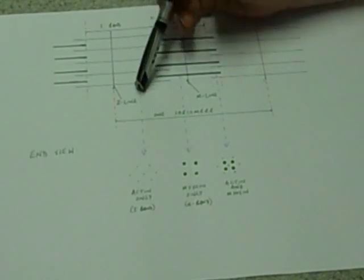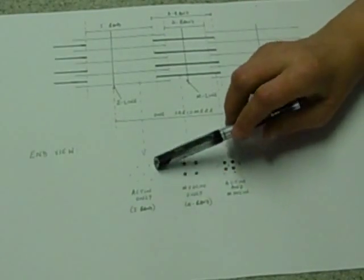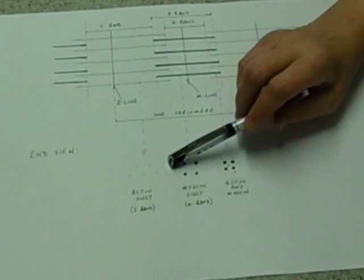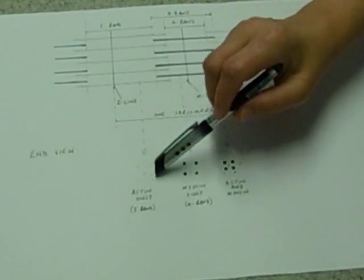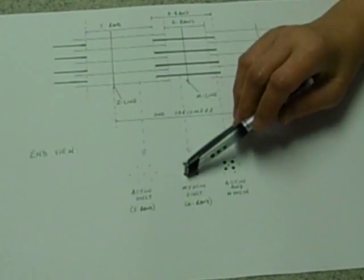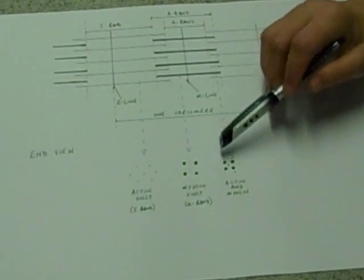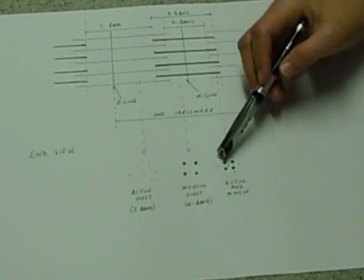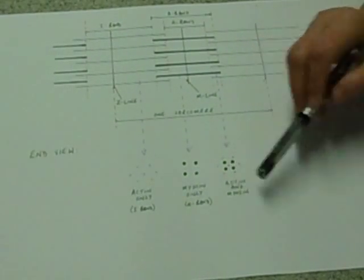If we cut sort of down and looked on these filaments end on, where we've got actin only we would only see thin filaments and we'd see them end on so they look like little dots. Where we've got myosin we would only see the thick filaments and they would look like bigger dots and where they overlap we'd see a combination of both of those things.